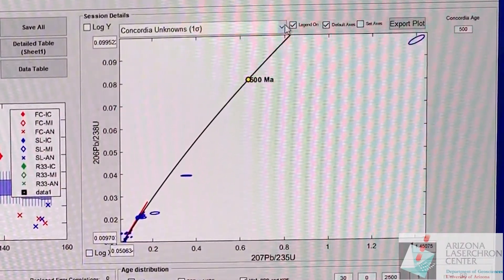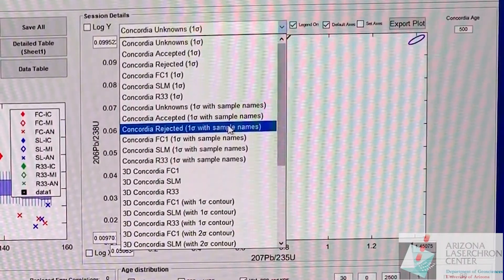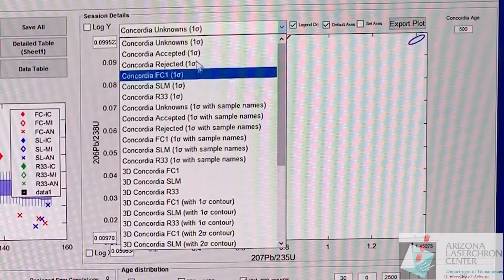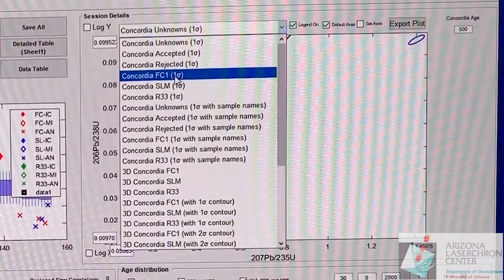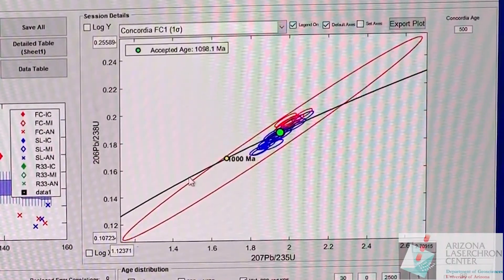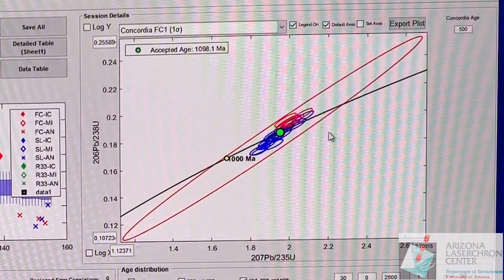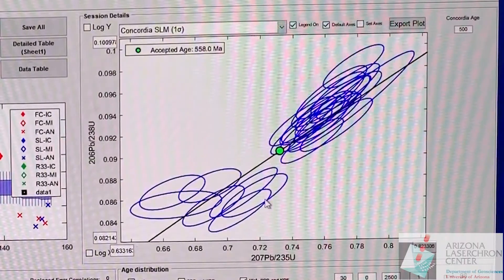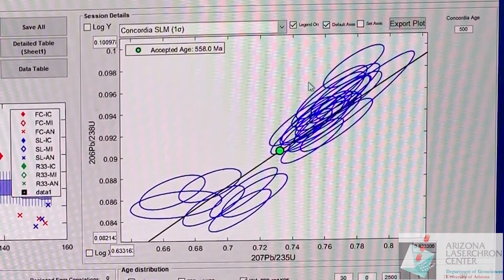The main window you're going to work in here is over here on the top right. You have a drop-down list of all kinds of different plots that would be relevant to look at. I'm going to go over just the main ones you really want to look at for the session. The first thing I'd like to look at are the Concordias of the three different standards.